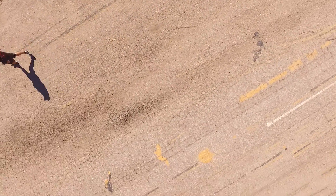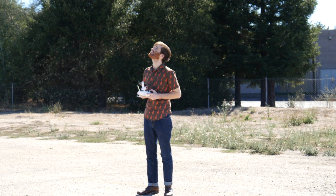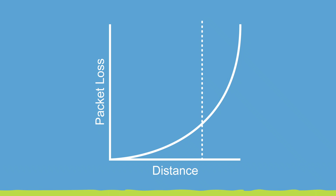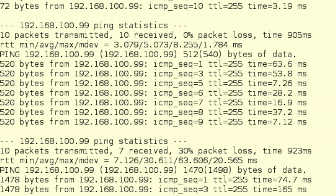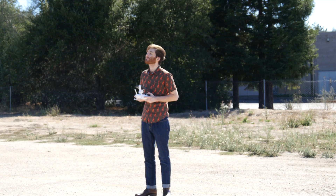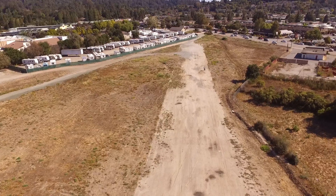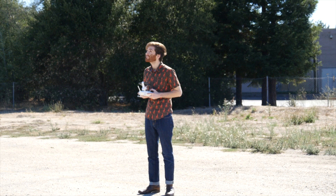As we suspected, the packet loss increases as the drone gets further away. We pause every 10 meters of distance and we measure the packet loss rate using ICMP, also known as ping. We take notes of our packet loss observations. Later we will use these numbers to help us fine-tune our app to better handle adverse network conditions.